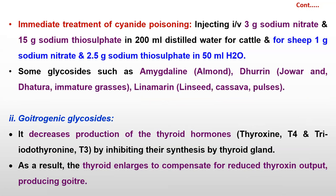Immediate treatment of cyanide: the animal should be injected with 3 grams sodium nitrate and 15 grams sodium thiosulfate mixed in 200 ml distilled water for cattle; and for sheep, 1 gram sodium nitrate and 2.5 grams sodium thiosulfate mixed in 50 ml, given by IV injection. Some cyanogenic glycosides such as amygdalin are present in almonds; dhurrin is present in sorghum and datura; and linamarin is present in linseed and different pulses.